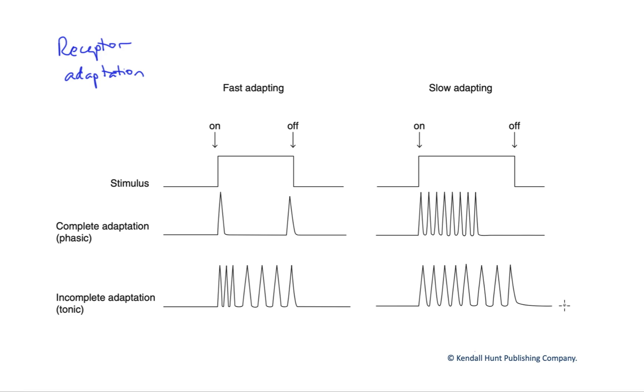And so we want to be informed of changes in a stimulus, but not necessarily always be informed of that stimulus continuously. Now, there are two different versions, two primary different versions of this receptor adaptation.